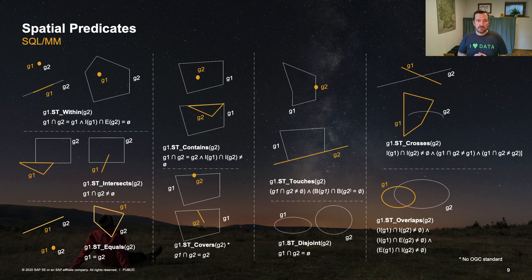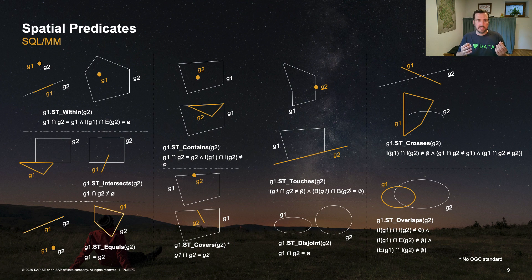Here you see one example of the predicates we offer and how they are implemented at the SQL script level. Take ST_Within in the upper left corner — that function lets you ask if one geometry g1 is within another geometry g2. Like in the example here, you see a point and a polygon. To do that at the database level, you can call g1.ST_Within(g2), and the result will be either 1 or 0 depending on whether g1 is placed within g2 or not.